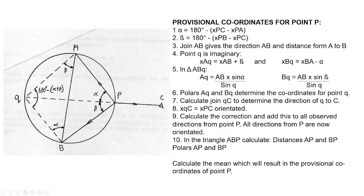Today I'm going to explain how to do the resection. The resection is basically to determine your position, which is point P, where the total station is set up. You use known coordinates like A, B, and C to calculate where you are — what is the coordinate of your position.